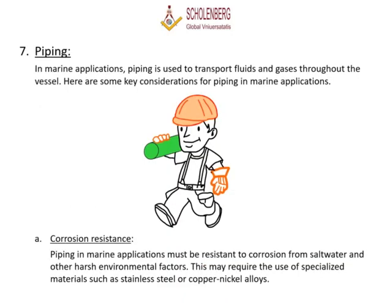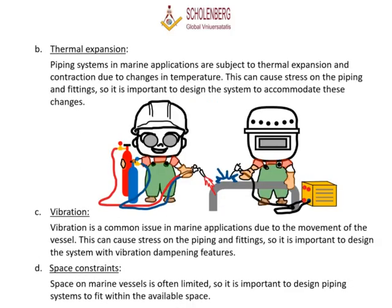7. Piping: In marine applications, piping is used to transport fluids and gases throughout the vessel. Key considerations include: A. Corrosion resistance — piping must be resistant to corrosion from saltwater and other harsh environmental factors, which may require specialized materials such as stainless steel or copper-nickel alloys. B. Thermal expansion — piping systems are subject to thermal expansion and contraction due to changes in temperature, which can cause stress on the piping and fittings, so the system must be designed to accommodate these changes.